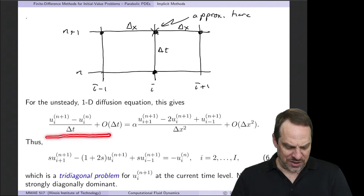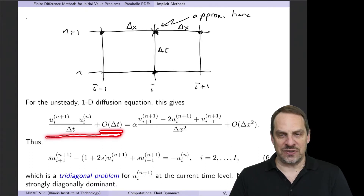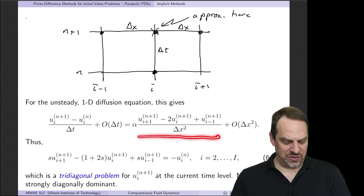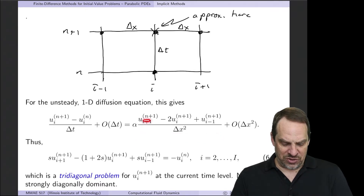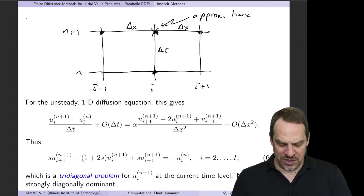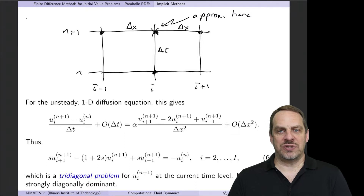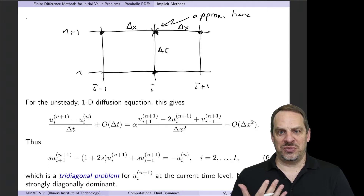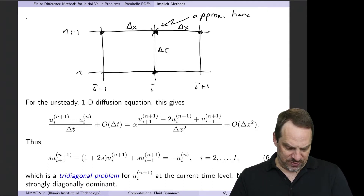We have u_i^{n+1} minus u_i^n over delta t — that is first-order accurate, a backward difference. Then we have a second-order accurate central difference for the second derivative of u with respect to x, with all terms at the n plus first time level. It's first-order accurate in time, second-order accurate in space, just like the first-order explicit method. But there's going to be a dramatic improvement in the numerical stability properties of this approach.